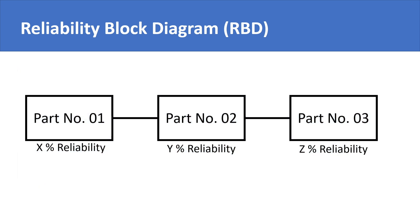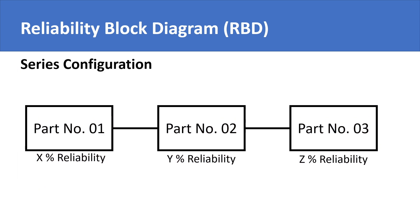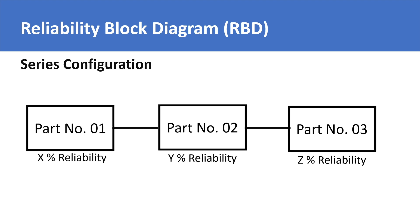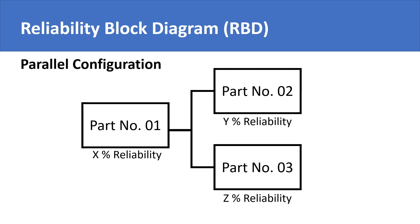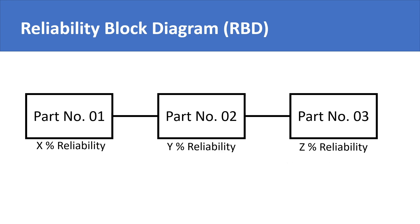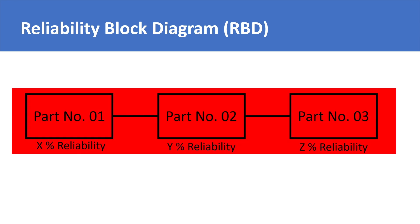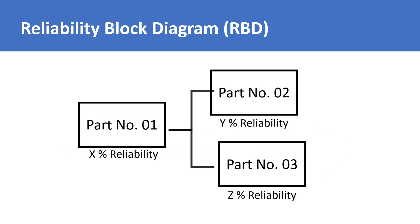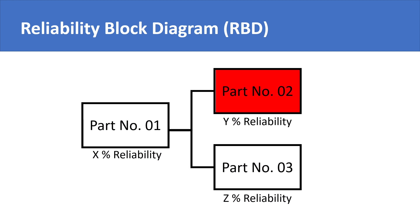There are two basic types of configurations in which the parts, components, or blocks in the reliability block diagram can be connected. They can either be in series, which is a simple chain of blocks as shown, or in parallel, where two or more blocks are connected to the same block. Series configuration represents that if any part fails, the system will fail.